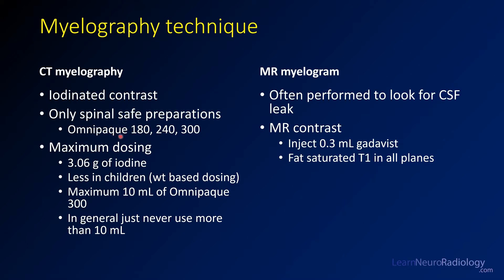You'll note that OmniPaque 140 and 350 are not included, because the osmolality is too far different from CSF, so the risk of seizures is higher. The amount of contrast you can use is dictated by how much iodine you can safely inject — that maximum is 3.06 grams, and less in children where they get weight-based dosing. A nice framework to remember is you can use 10 milliliters of OmniPaque 300. In general, if you never use more than 10 mL, even if you're using 180 or 240, you typically get adequate opacification of the thecal sac without worrying about giving too much contrast. However, if you look at the dosing in the package insert, you'll see that's a little more than 10 that you can safely give.